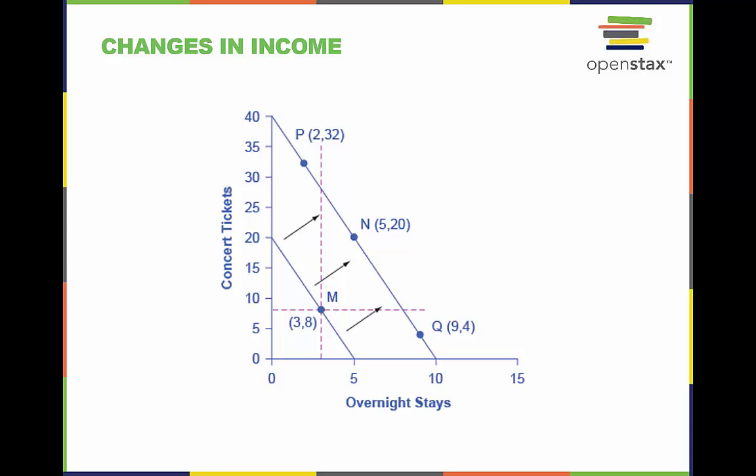What if our income increases or decreases? Would our utility maximization mix stay the same? The answer depends on what type of products we are choosing between. Normal goods or inferior goods?